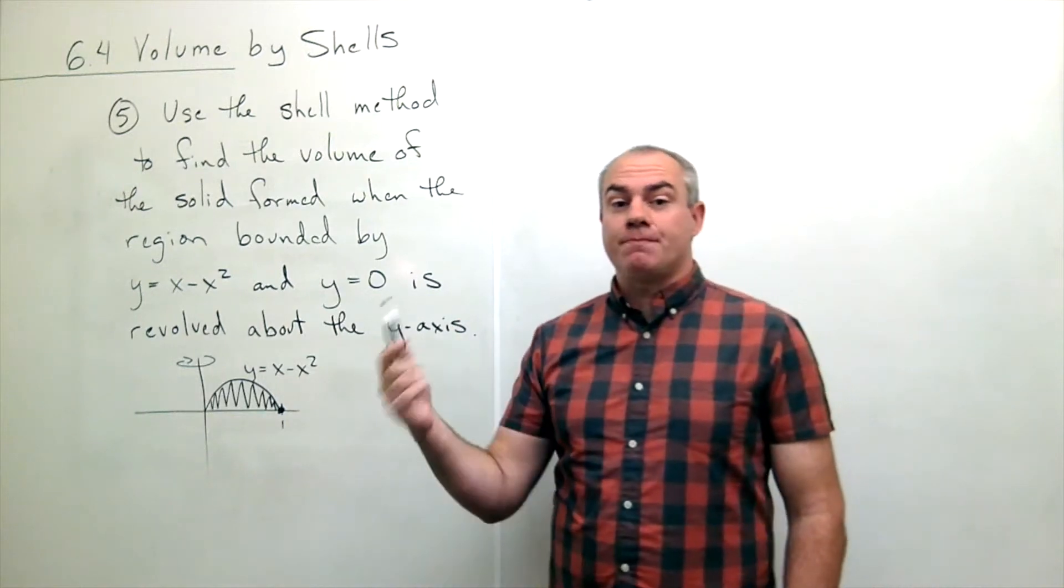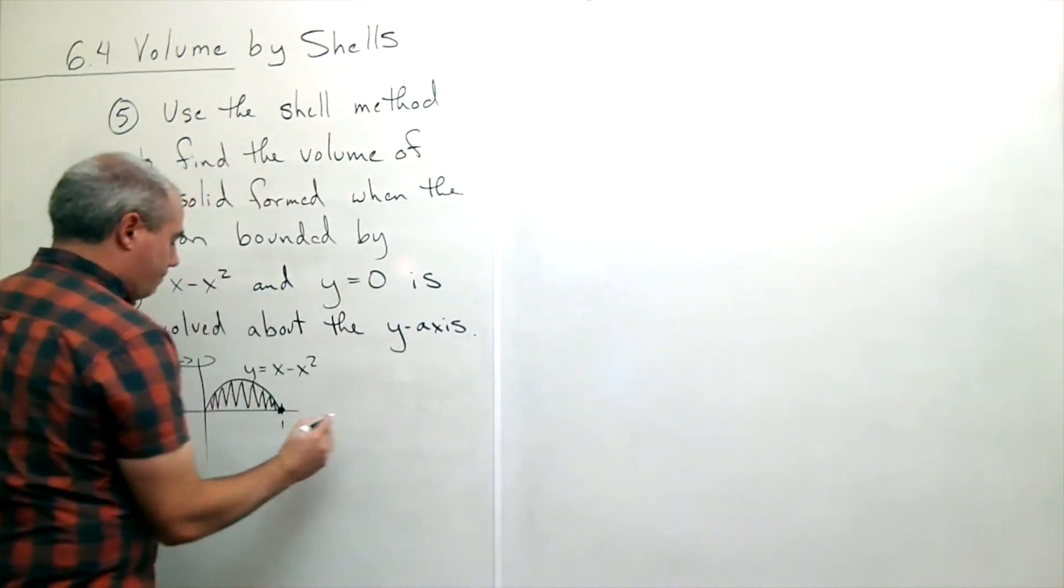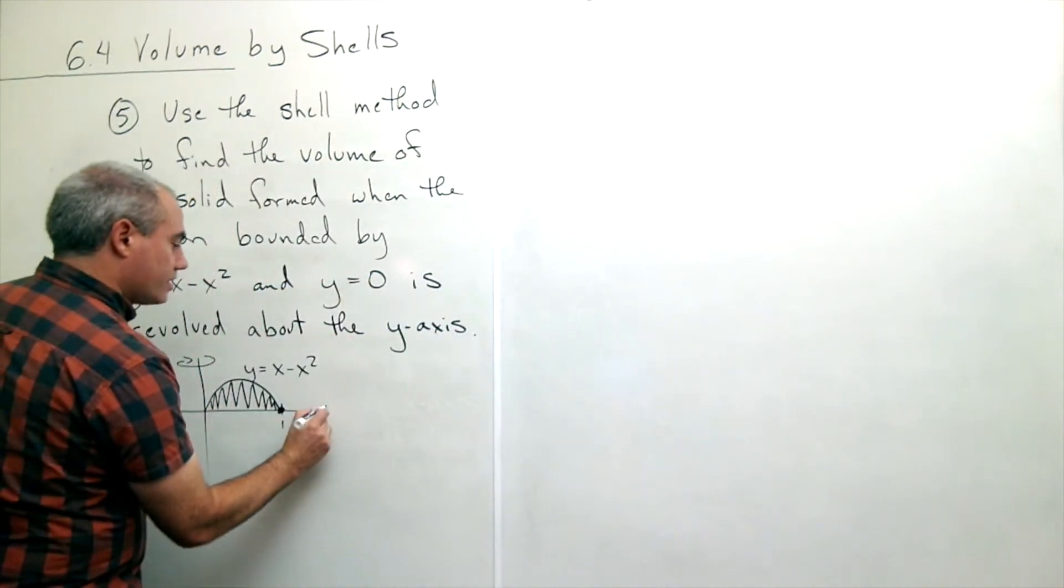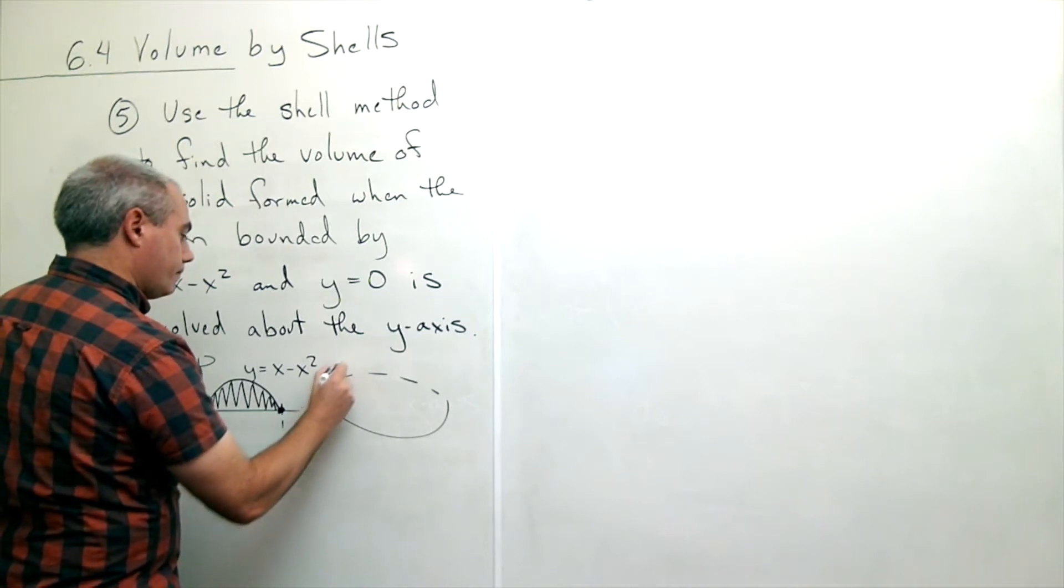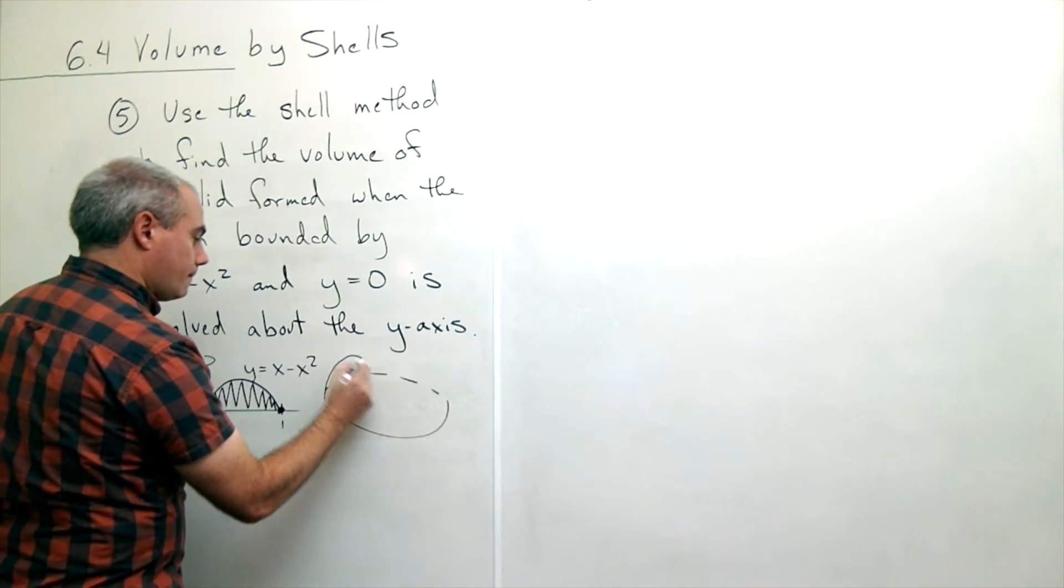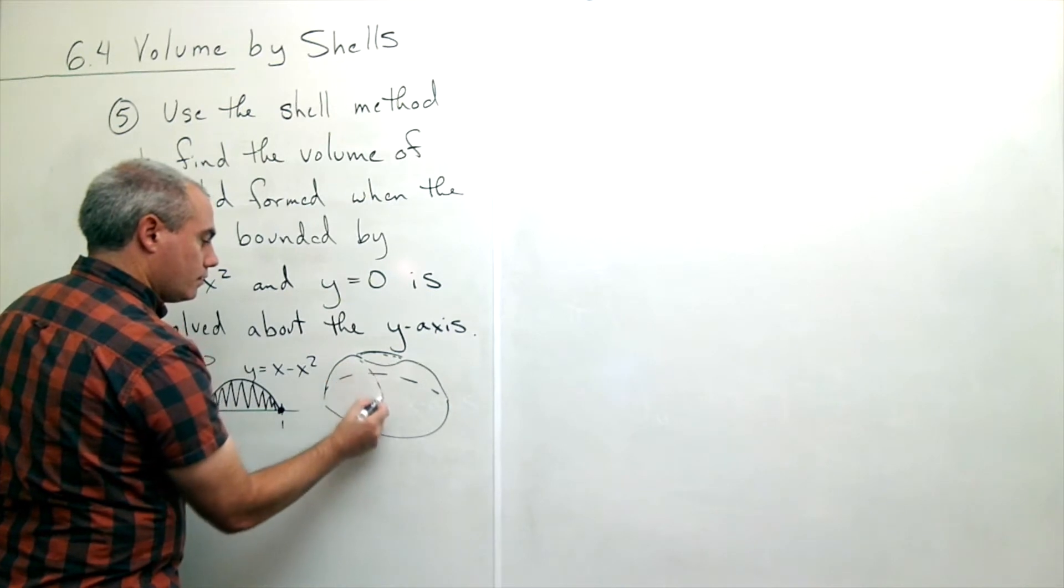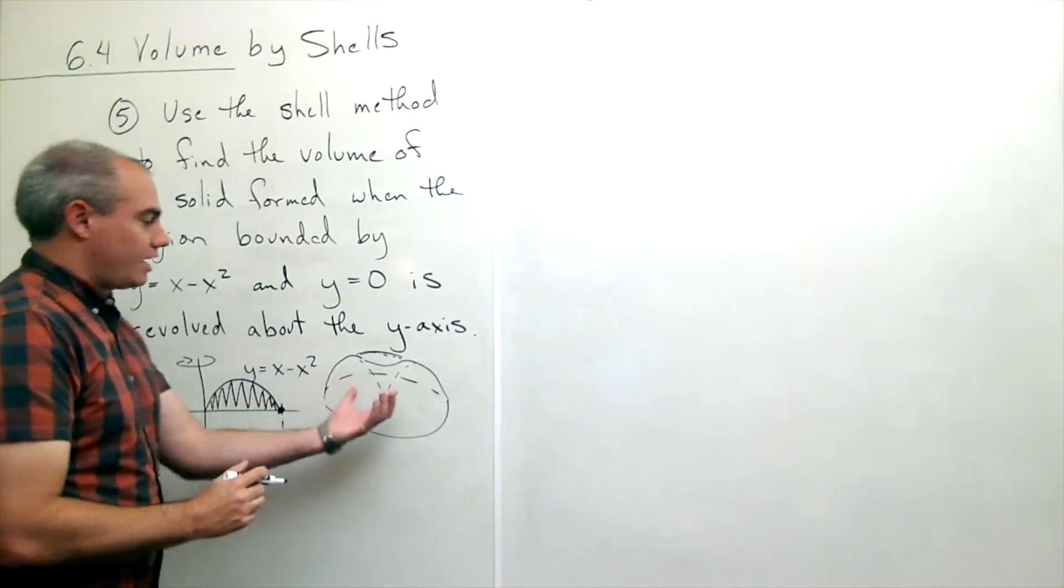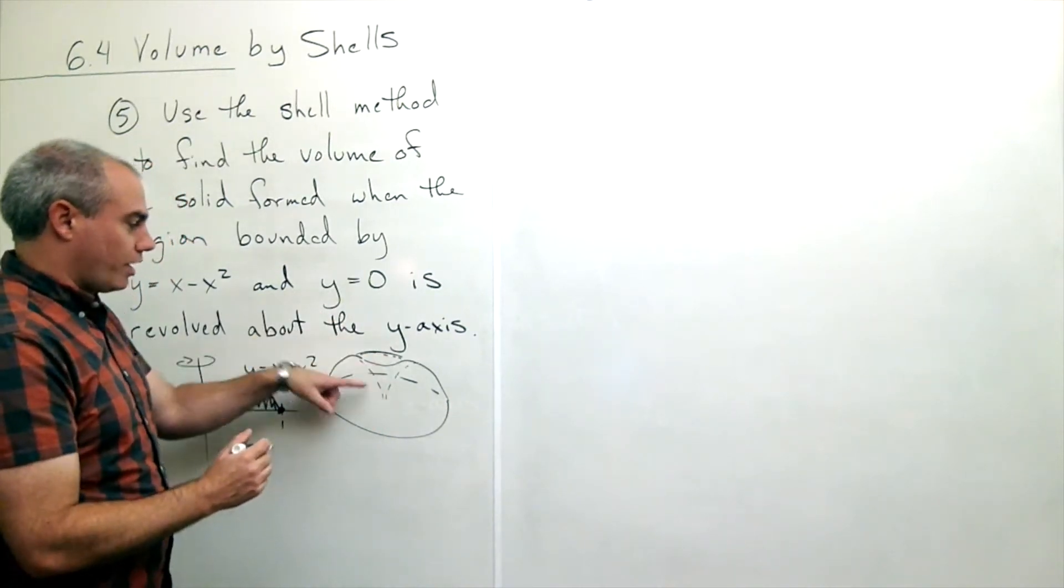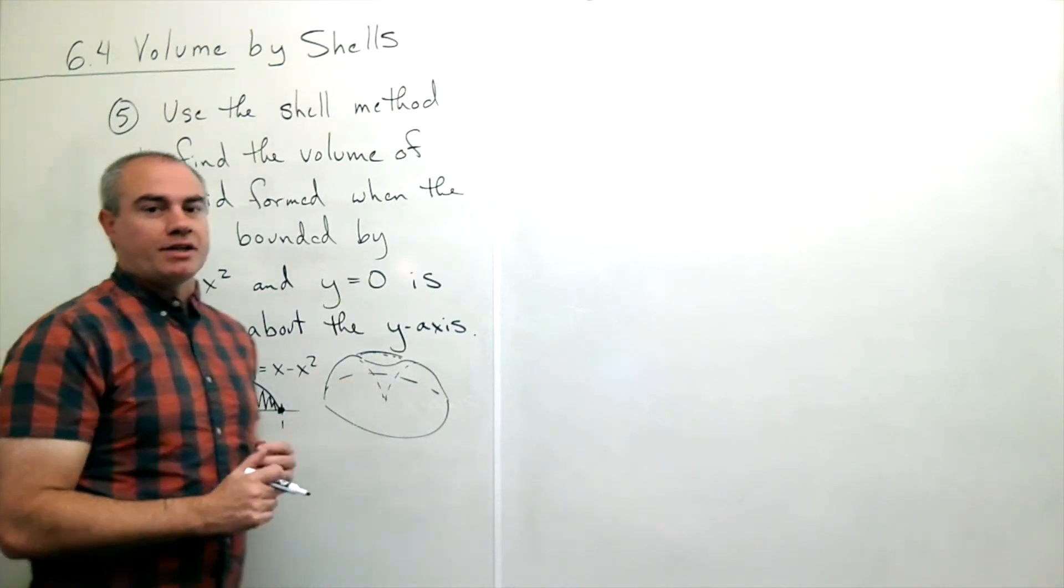Now, when we go ahead and spin that region about the y axis, we get this shape that would look something like maybe something like a bunt cake maybe. So you can kind of see it right here. There's like kind of a little tornado cut out of the middle of this thing and it looks something like a bunt cake.